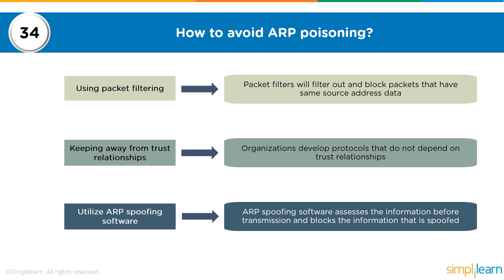Whenever a machine wants to send a packet to another machine, it looks up the ARP table, identifies the IP address and associated MAC address, and prints that as the destination IP and MAC on the data packet. The packet is sent to the switch, which identifies the MAC address and forwards the packet to the relevant machine. To confuse the switch into sending the packet to a different machine, an ARP poisoning attack is created — generally used to set up a man-in-the-middle attack.